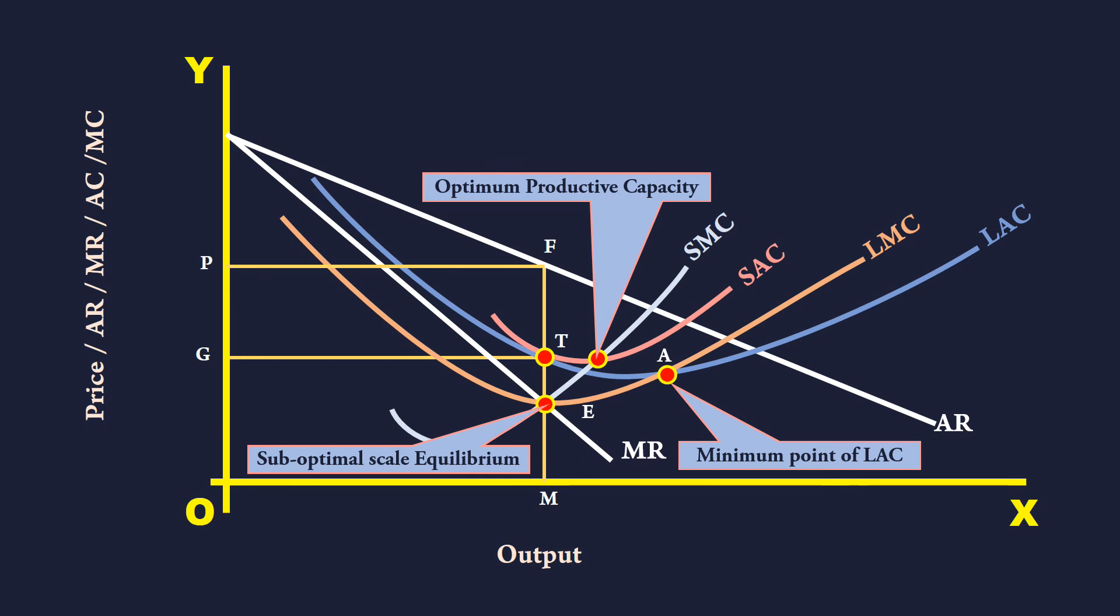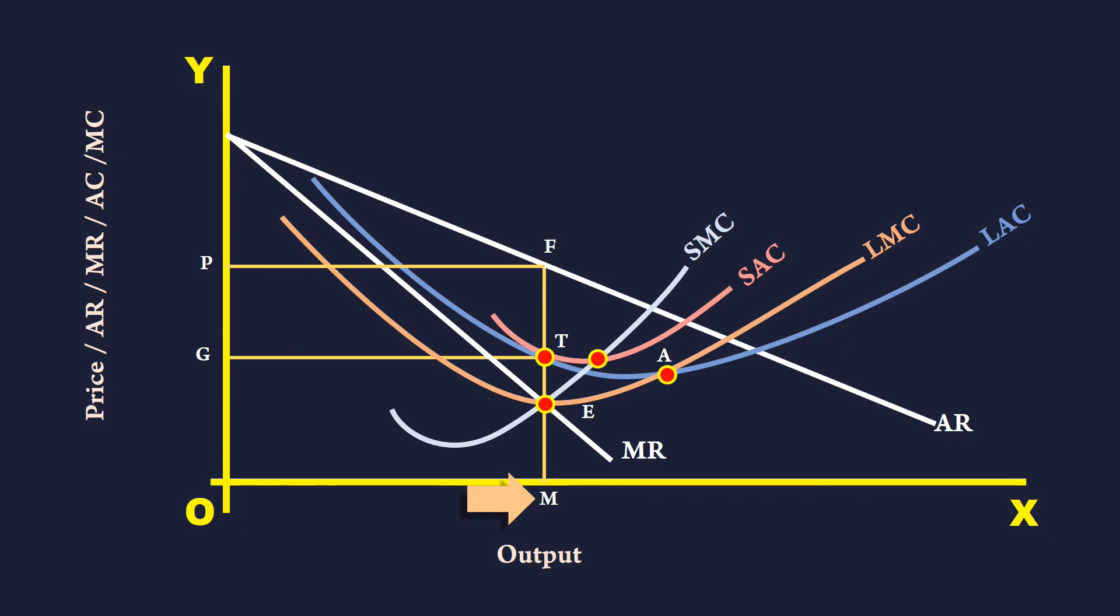The main contributory factor to this state of the firm is the prevailing market condition. The market condition is reflected by the AR and MR curves. Accordingly, the firm decides to produce M units and has chosen the plant represented by SAC curve. So in short, we can say it is the market condition which leads to sub-optimal scale equilibrium.